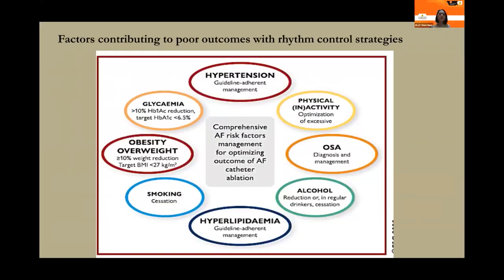Factors affecting rhythm control outcomes include major cardiovascular risk factors such as hypertension, glycemic control, smoking, hypercholesterolemia, obstructive sleep apnea, physical inactivity, and alcohol use. Optimization of comprehensive AF risk factor management is very important to improve outcomes for either rhythm control strategy or catheter ablation.